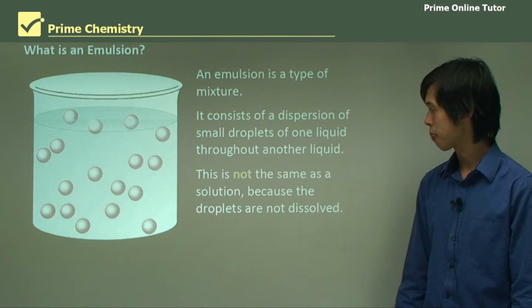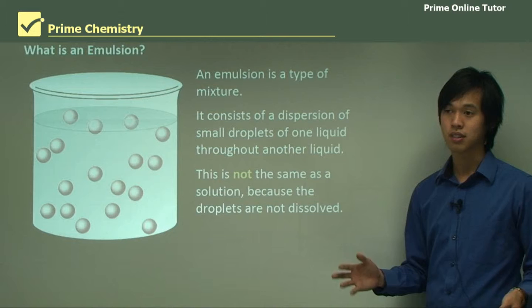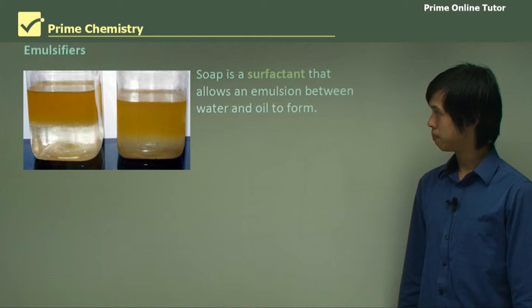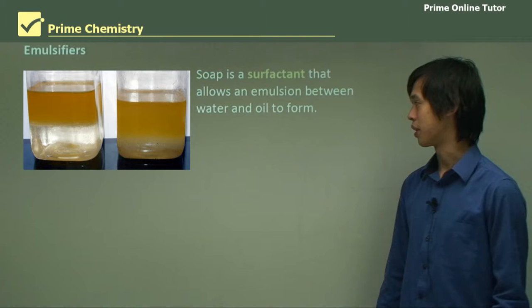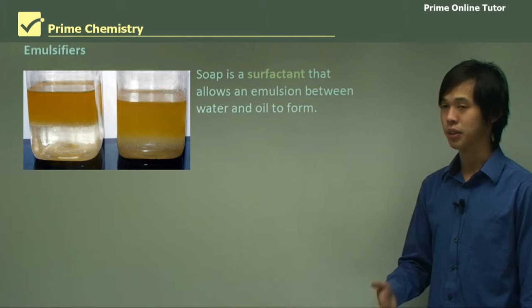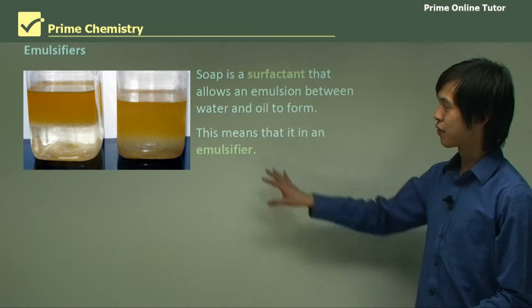An emulsion is not the same as a solution because the droplets are not dissolved. The droplets don't dissolve in the water or in the other liquid. An emulsifier is something that encourages emulsions to be produced. Soap is a surfactant — we know that — and soap reduces the surface tension of water, allowing an emulsion to form between oil and water, which means it's also an emulsifier.